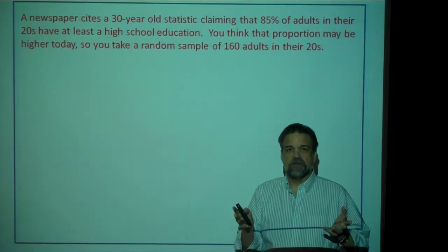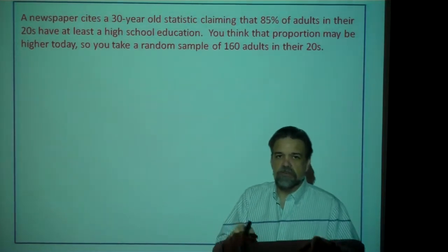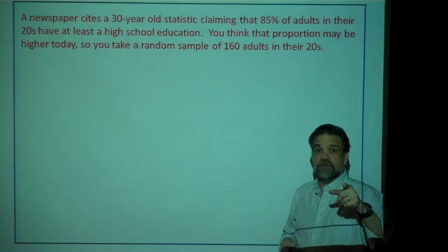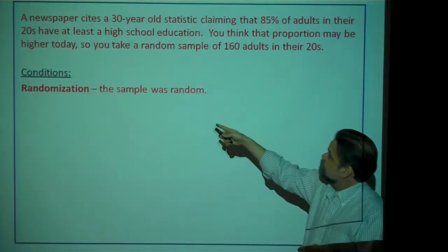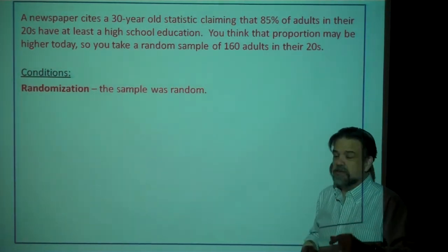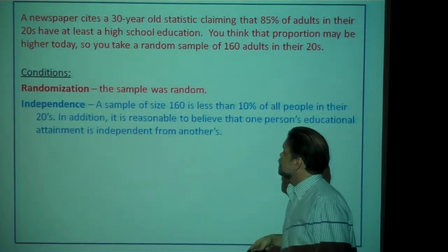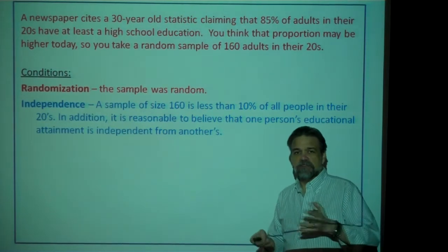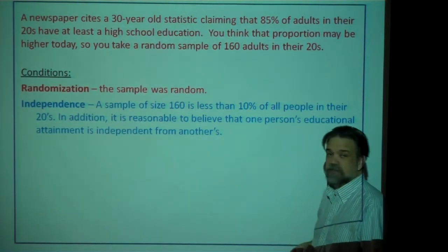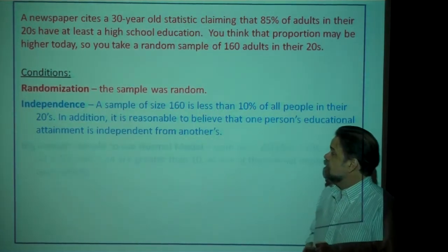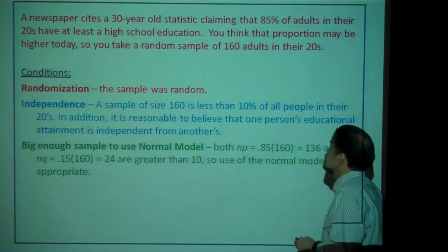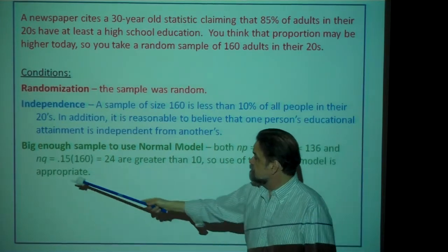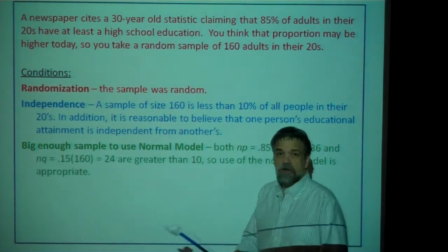Basically what you're doing is taking a sample proportion. We know about sample proportions — we're just looking at their distribution when examining sampling distributions. But we also know the first thing we need to do is check our conditions. First, randomization — yes, it says they were random, so good. Second, independence — a sample of size 160 is way less than 10% of all people in their 20s, and it's reasonable to think one person's educational attainment won't affect another's. Finally, is N big enough? N is 160, P is 0.85, so N times P is 136 and N times Q is 24 — both greater than 10.